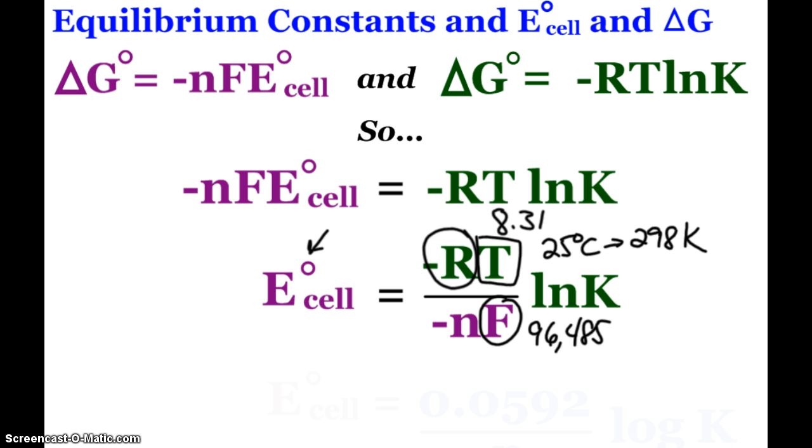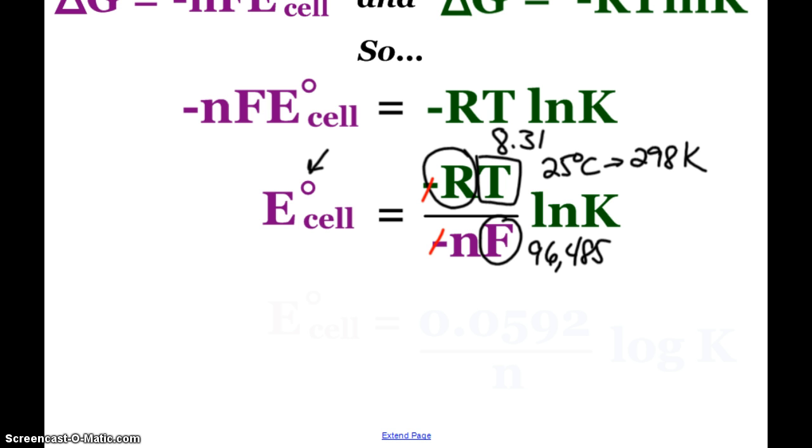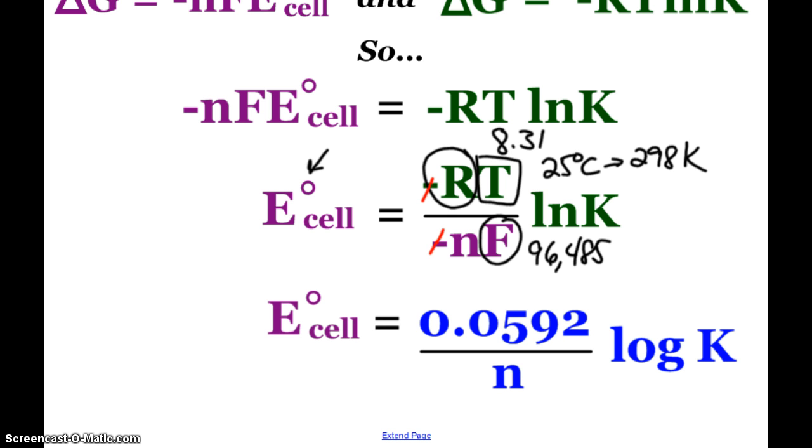What we can do, we can get rid of our negative signs, negative over negative, and we can combine those three pieces of known information, and then typically, we like to express this through the eyes of our normal log. Here is the equation that we typically see in a chemistry book. It's 0.0592 divided by n times the log of our equilibrium constant.